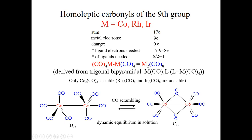There is a second structure for Co₂(CO)₈ in equilibrium in solution, resulting from the fluxional behavior associated with coordination number five and pseudorotation. The CO ligands can scramble between axial and equatorial positions, and also from one cobalt atom to the other through a bridging intermediate. In this bridging structure two of the carbonyls bridge the two cobalt atoms, increasing the coordination number from five to six, which is generally better for carbonyls. When crystallized from solution, the non-bridging structure with C₂ₑ symmetry is found to be the most stable structure in the solid state.